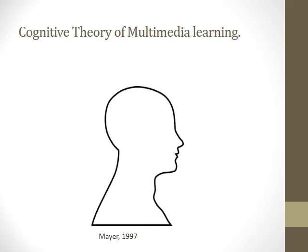Meaningful learning occurs when a learner selects relevant information from auditory and visual channels, organizes the information into a coherent representation, and makes connections between each channel.